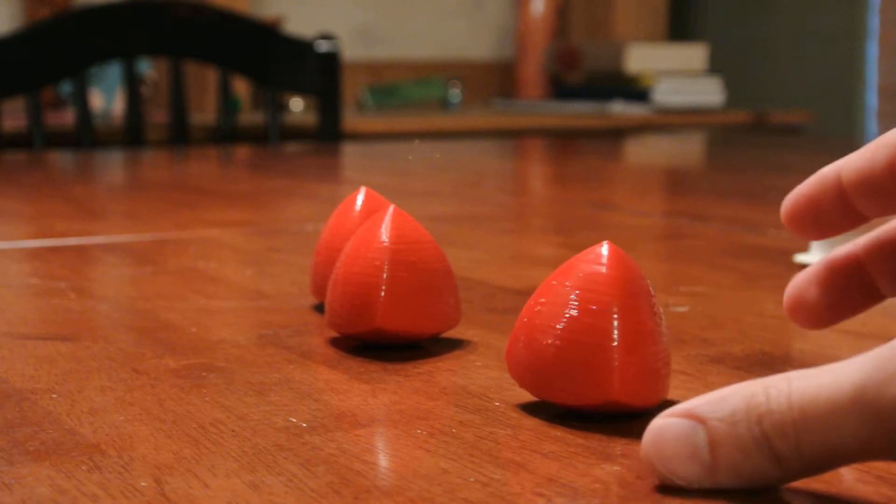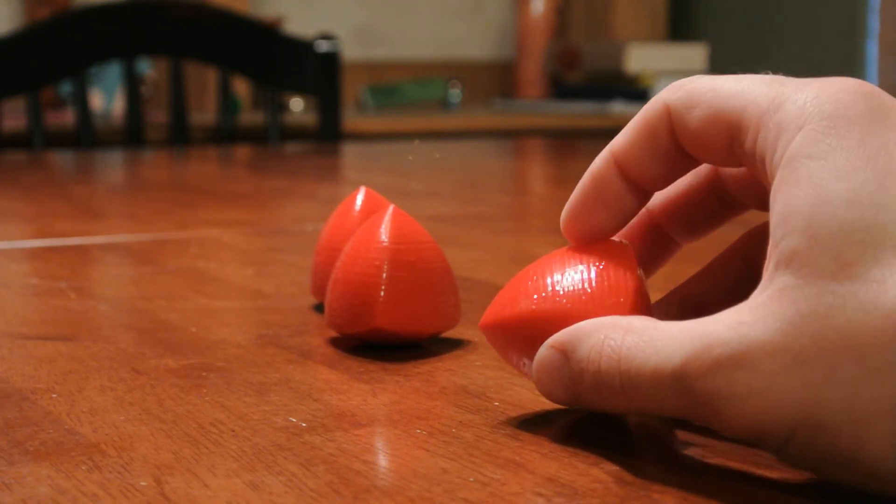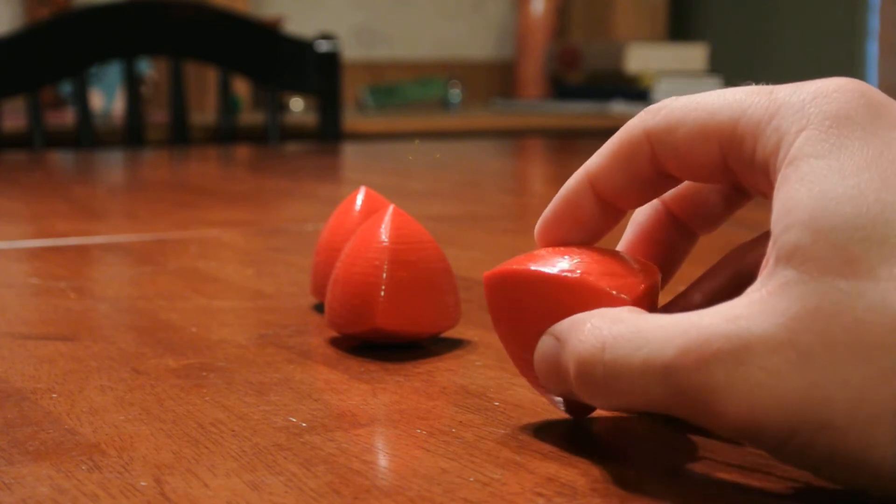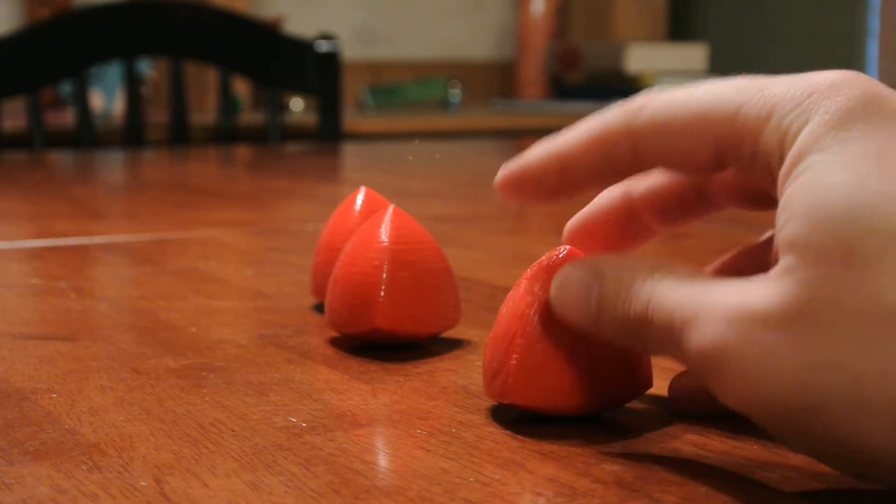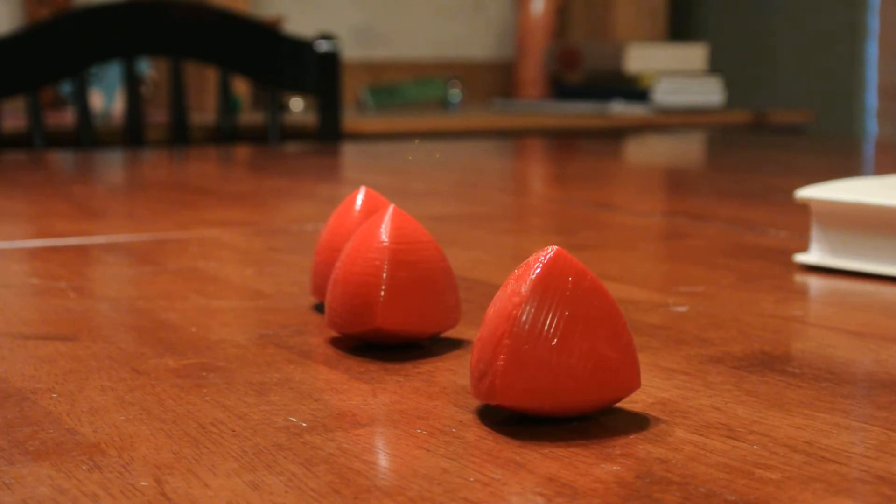What makes a Meissner tetrahedron interesting is that it actually has the same width at all points on the shape. Now, if someone came to me and asked me to think of a shape that has the same width all the way at all points, I would think the only shape you could come up with where that would be true would be a sphere, that you couldn't do it any other way.